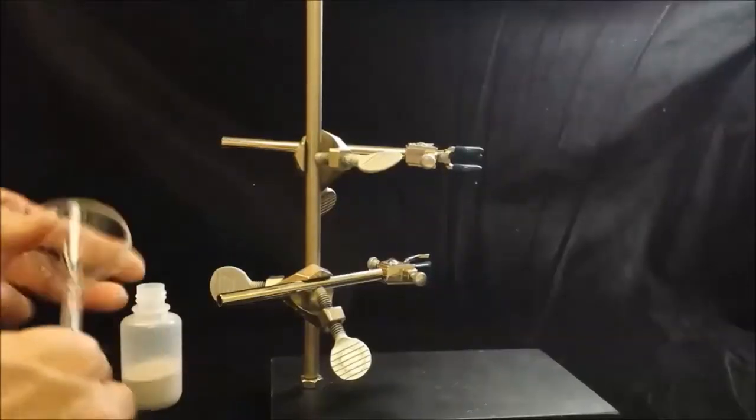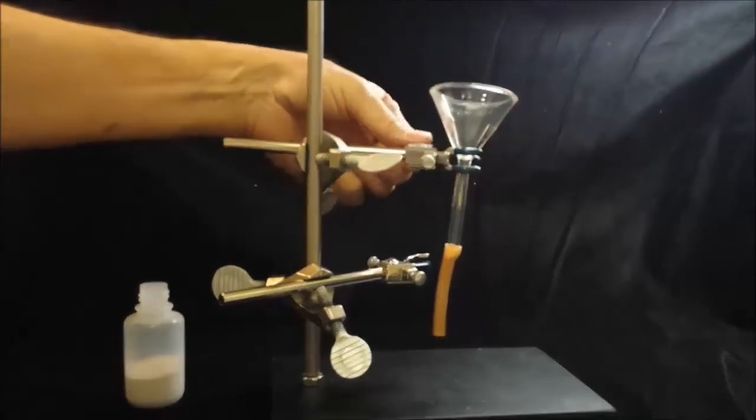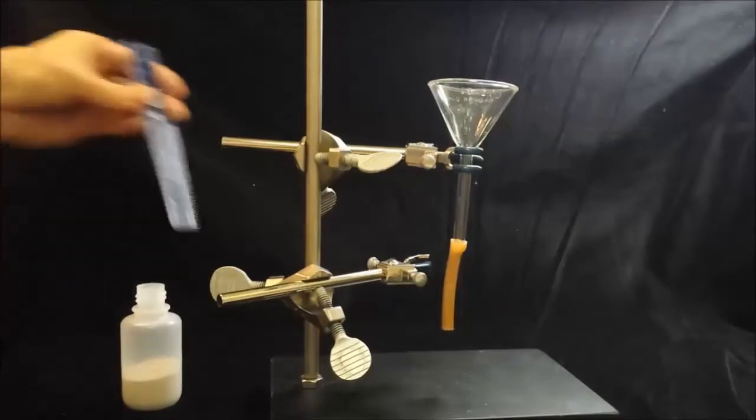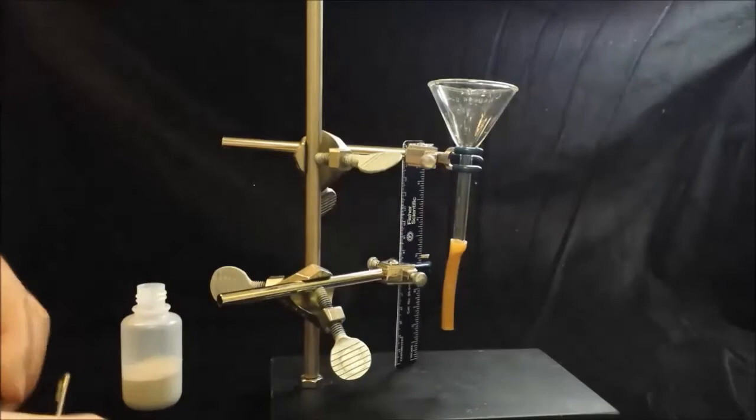To make the sand dune, I got some gear from the chemistry stockroom. A ring stand, glass funnel, some clamps, rubber tubing. I mounted a ruler to put a scale in the video so students could estimate the size of the parts of the sand pile if this was important.